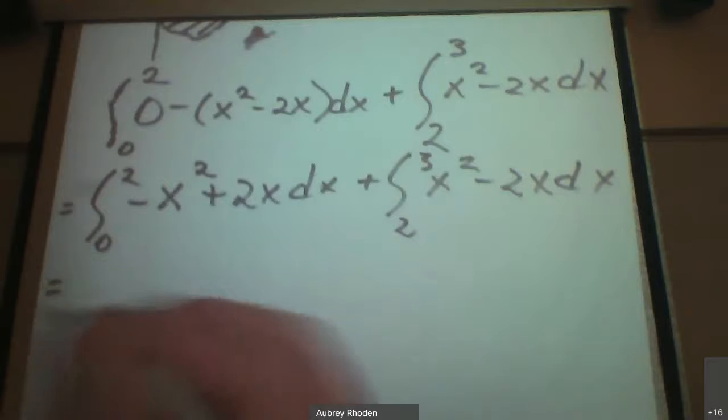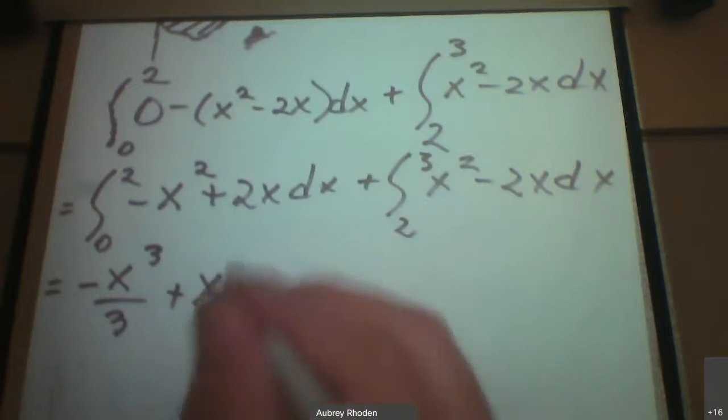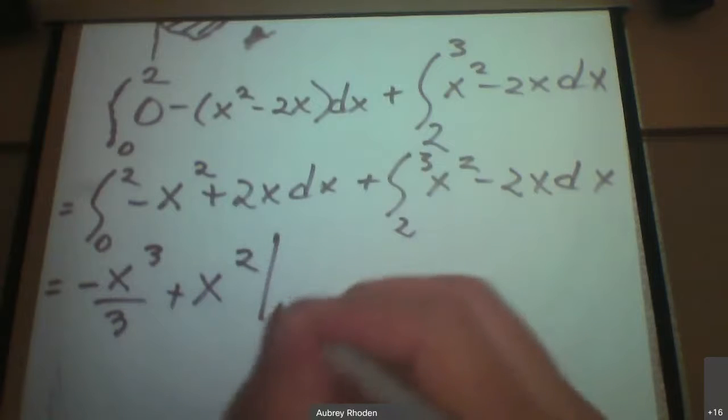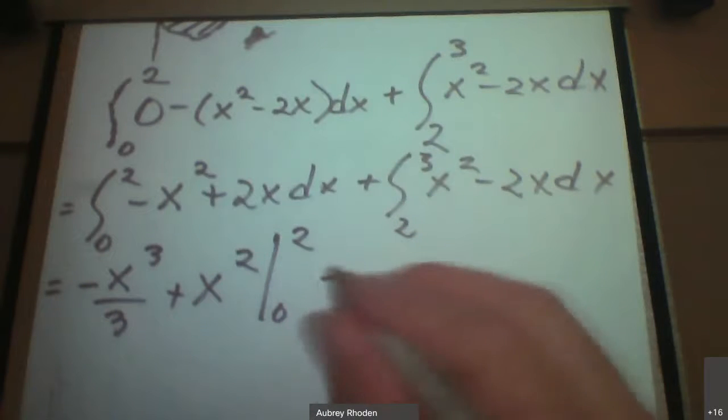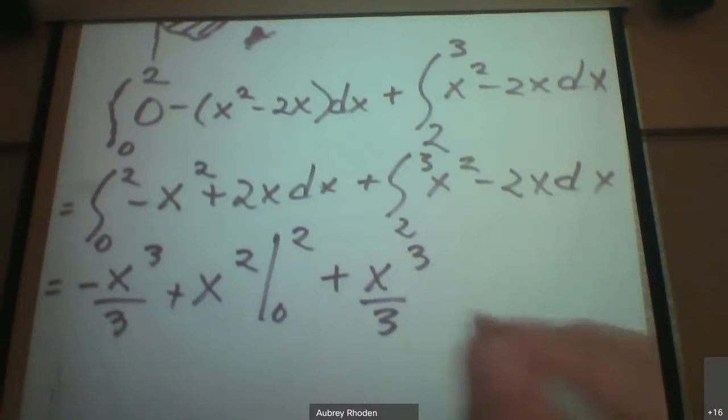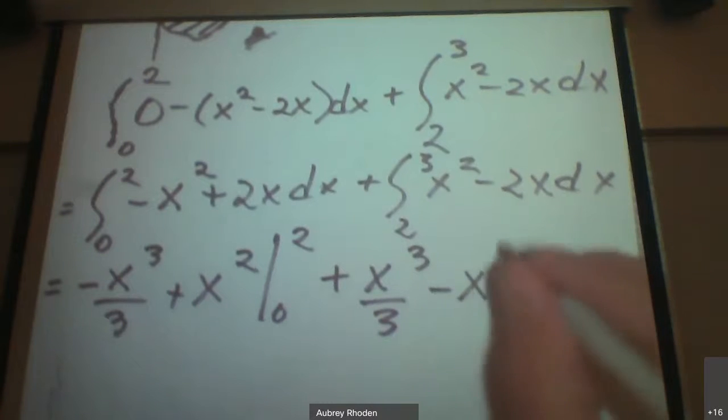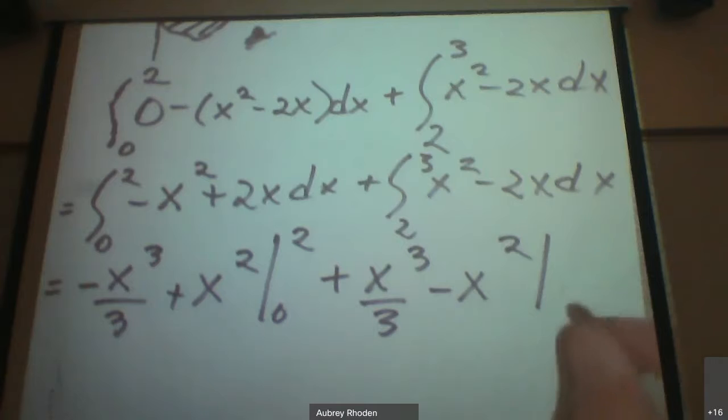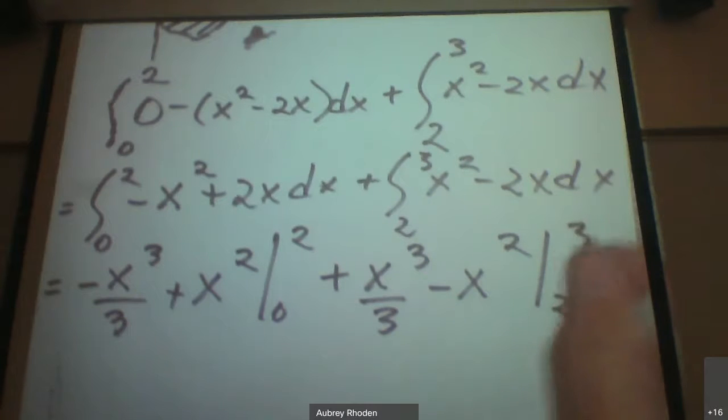So that's going to come out to negative x cubed divided by 3 and then plus x squared. So that's going to have to be evaluated at 0 and at 2. And then plus, and this is going to become x cubed divided by 3 and then minus x squared. And this guy is going to have to be evaluated at 2 and at 3.